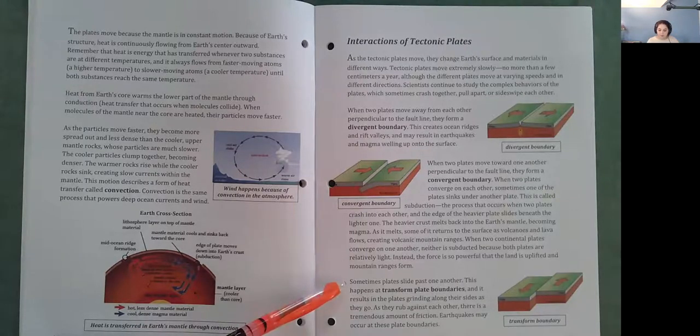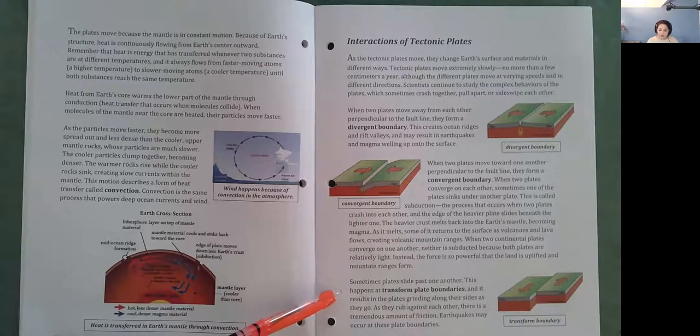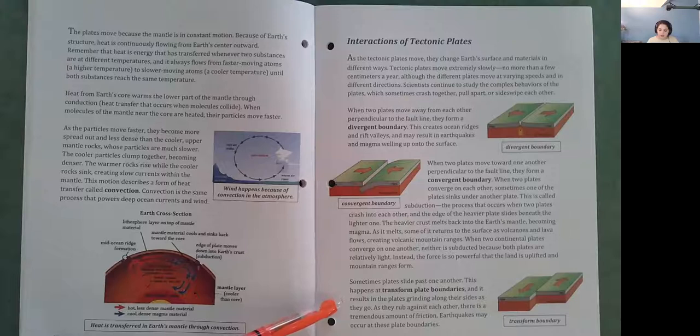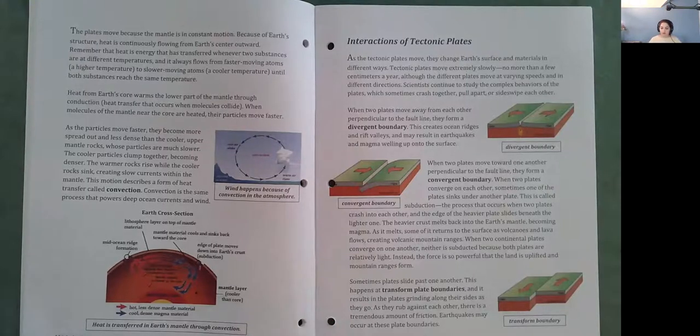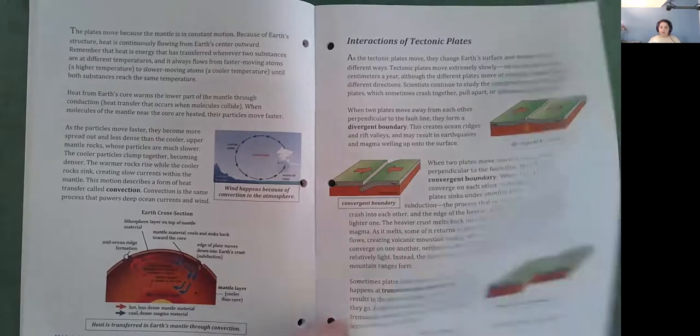Sometimes plates slide past one another. This happens as transform plate boundaries and it results in the plates grinding along their sides as they go. As they rub against each other, there is a tremendous amount of friction. Earthquakes may occur at these plate boundaries.